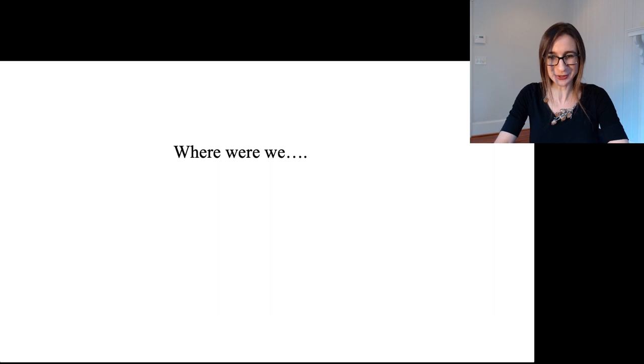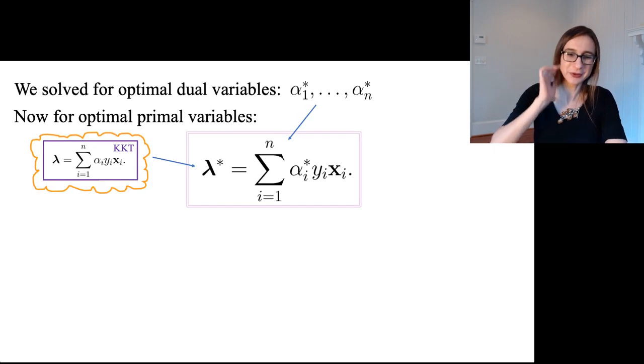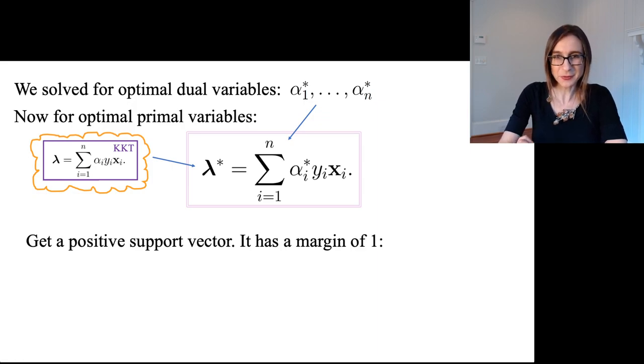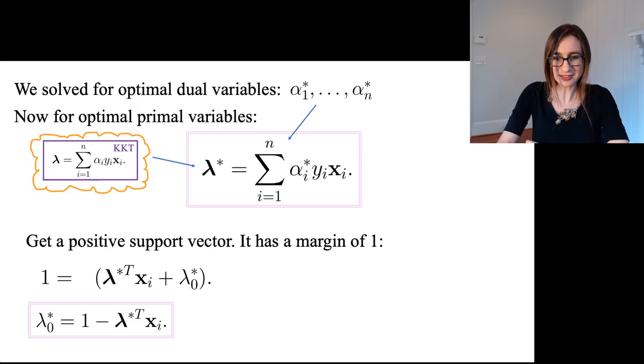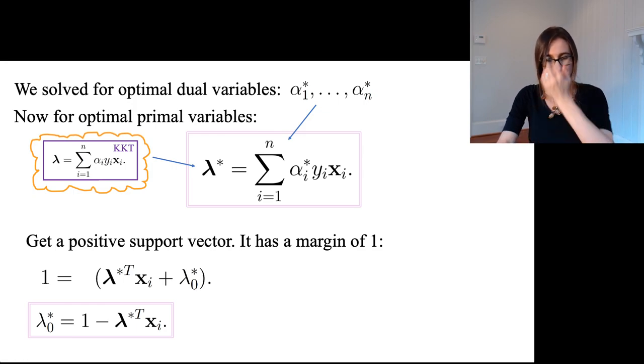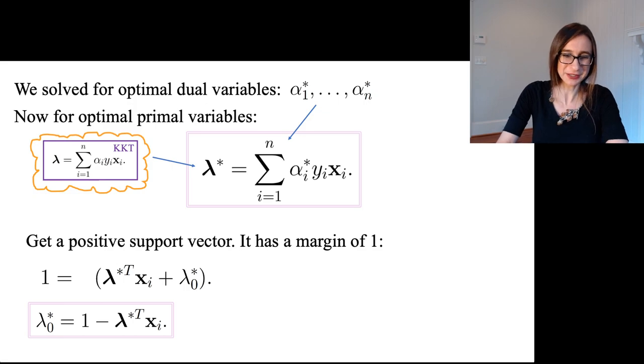Before I got excited about support vectors and the name of them and all that other stuff, we were trying to figure out what lambda zero star was. So, the way we're going to figure that out is we're going to grab a positive support vector. So, grab a data point with y equals one that has a margin of one. And we know there will be one that exists because if one didn't exist, that means we don't have the optimal solution. That means we can make the solution better. We can make the norm flatter until we actually hit it so that one of them has a margin of one. So, pick this point, yi equals one because it was a positive data point, and then I can solve for lambda zero star just from there. So, all I have to do is pick a support vector and I get lambda zero star for free.